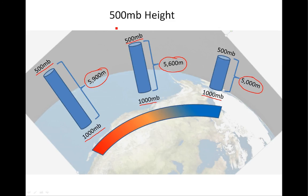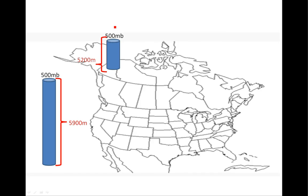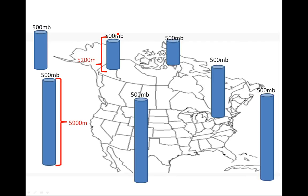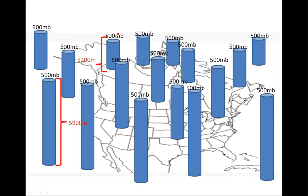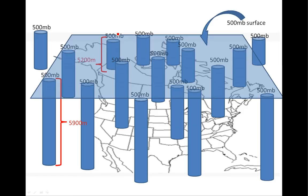Now we want to try to build a 500 millibar surface. Looking at a map view, we've got that tall column off the coast of Mexico and a shorter one over the Yukon. You can measure the 500 millibar height pretty much anywhere, and with enough data points you can start to get an idea of what the 500 millibar surface looks like. The 500 millibar surface is like a big sheet of plywood laid on top of all those columns of air topped at about 500 millibars.